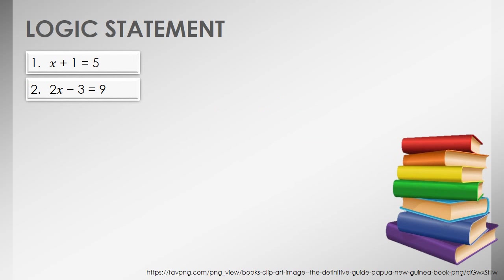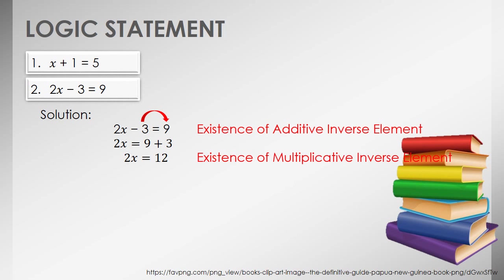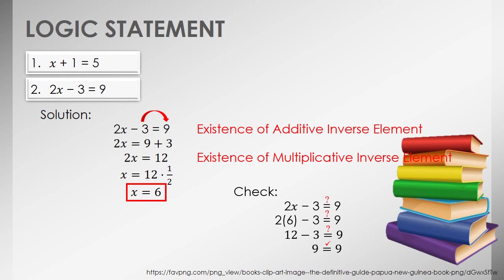The second example involves finding x similarly. We combine like terms through the additive inverse element, then add the constants on the right-hand side. To solve for the value of x, we apply the existence of multiplicative inverse element. Multiplying the constants gives us the value of x. We verify that x = 6 makes the open sentence true. Therefore, we have the truth set containing 6.